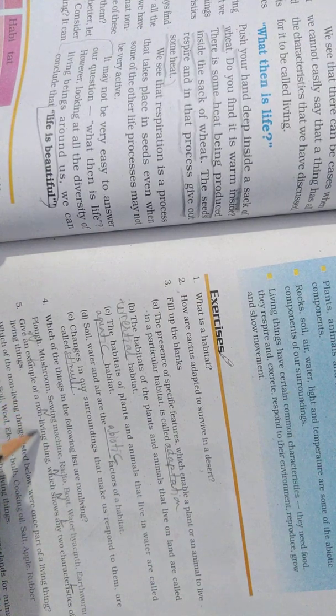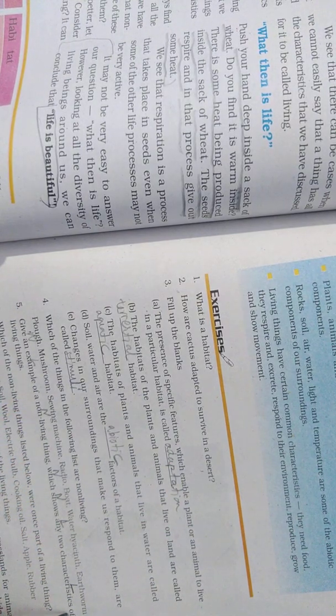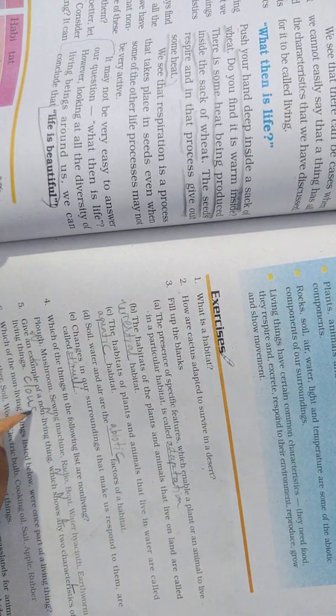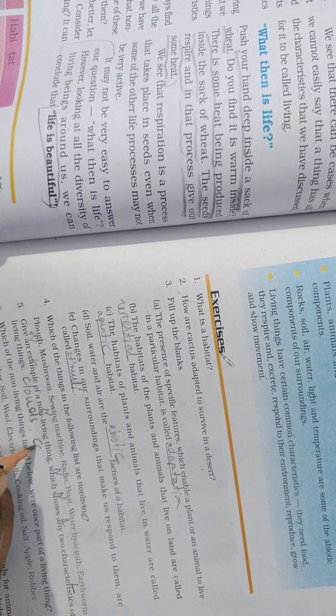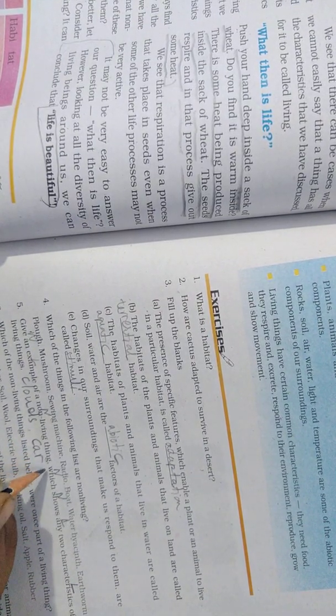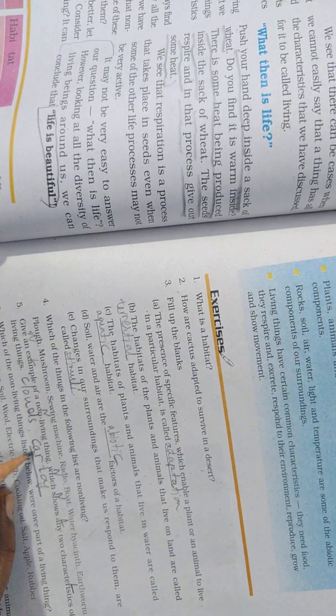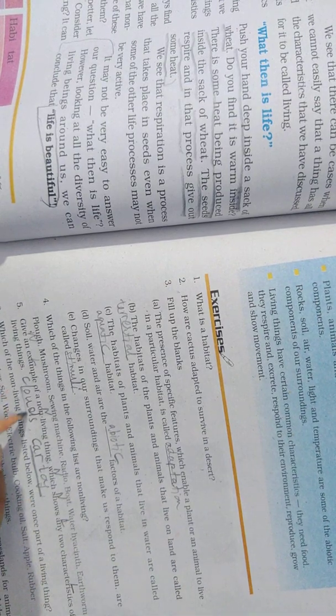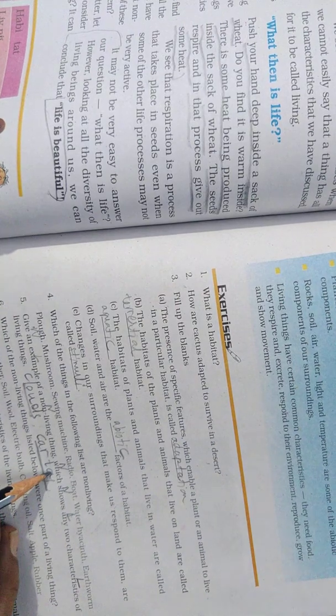Give an example of non-living thing which shows any two characteristics of living thing. First one is cloud. Second is car or toy car. Because toy car moves like living organism and clouds also move like living organism and change shape.